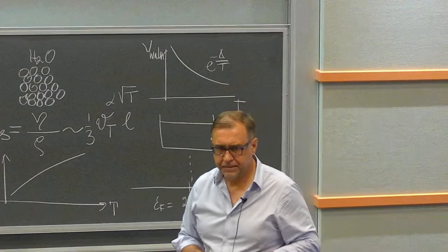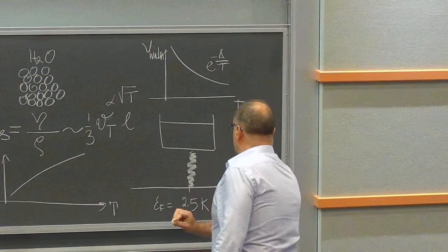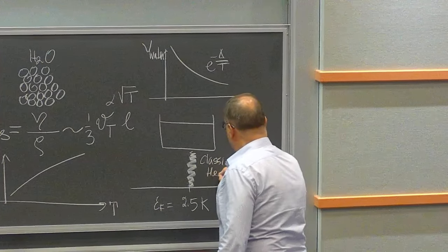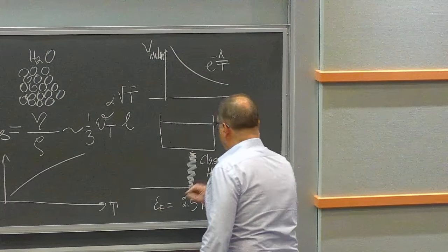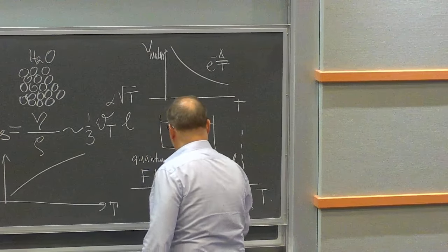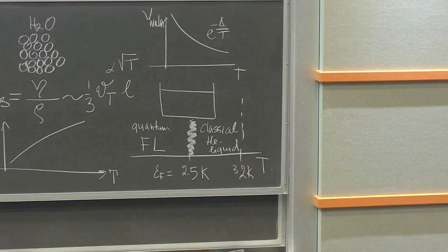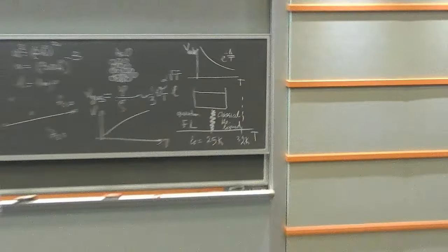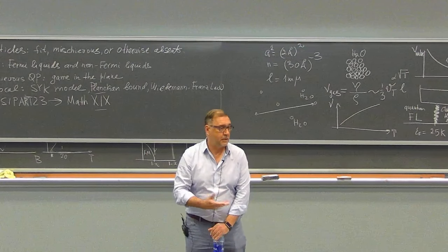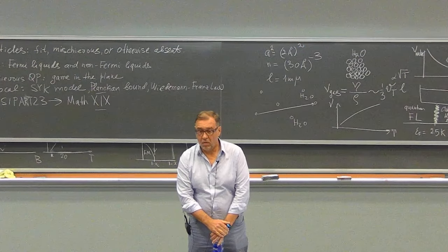Below the Fermi temperature it is a Fermi liquid — there is no phase transition, just a crossover. Above: classical helium liquid; below: quantum Fermi liquid. It's still a liquid — it splashes, it has surface tension — but if I study properties like viscosity and thermal conductivity, surprisingly I'll find something that closely resembles properties of an ideal gas.